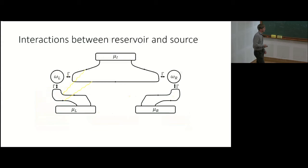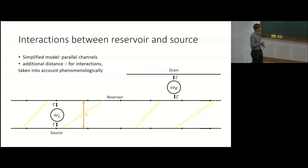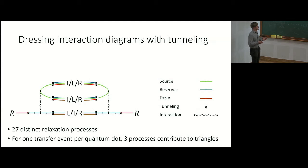To test this, we included interactions between the reservoir and the source leads in the theoretical model. I use a simple model where the source runs parallel to the reservoir channel, and I account for the additional distance between reservoir and source phenomenologically by modifying the interactions depending on this distance. Again I have to dress the interaction diagrams with tunneling, but here the interaction takes place between the intermediate region and the source lead.